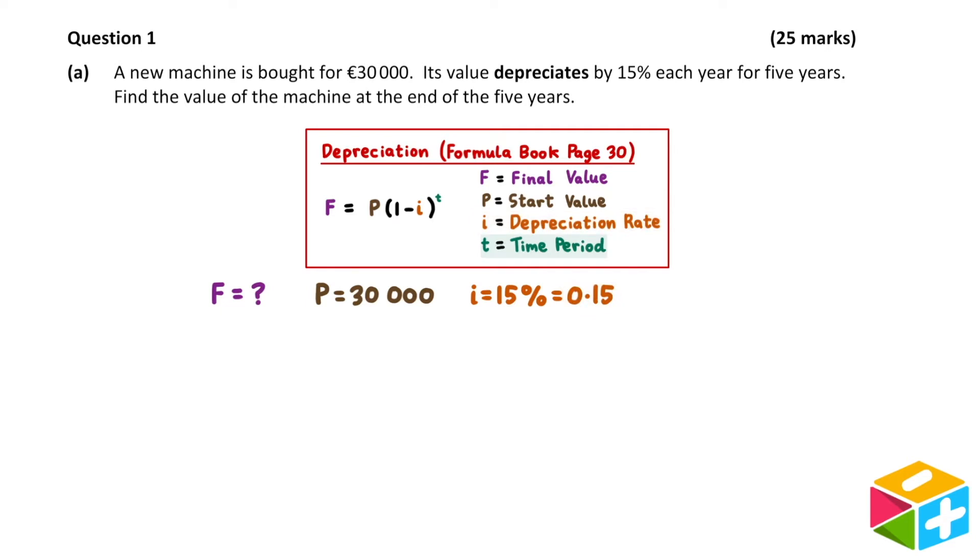The last letter in the formula is t, which represents the time period. In our question, we're working with a period of 5 years, so we'll set t equal to 5. Now that we know the values of each of our letters, let's plug them into the formula.